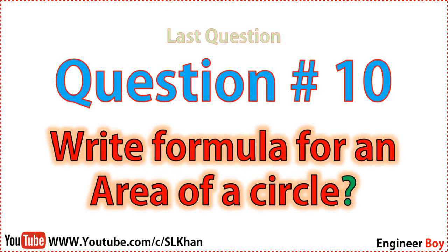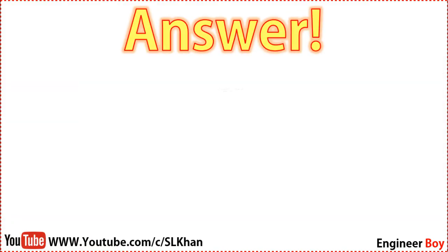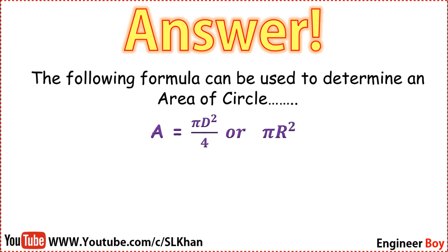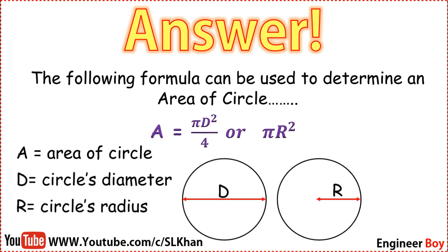Question number ten: write the formula for the area of a circle. The following formula can be used to determine the area of a circle: A = π d² / 4, or A = π r². This formula can be used to determine the area of any circle, where A represents the area, d is the circle's diameter, and r is the circle's radius.